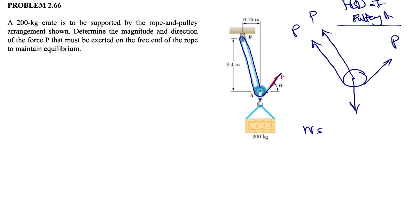So we started with the free body diagram of pulley A, and one force left which would be the weight of the crate, which is 200 kilograms. If we multiply that by acceleration of gravity, 9.81 meters per second squared, we can find the weight, which will be 1962 kilonewtons.